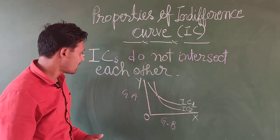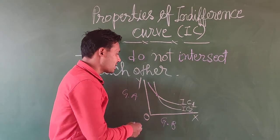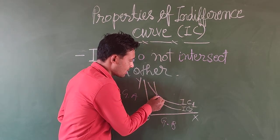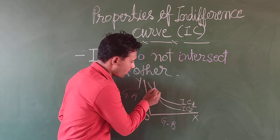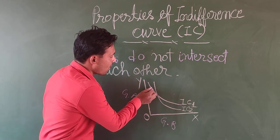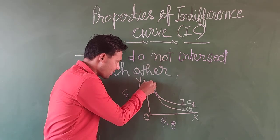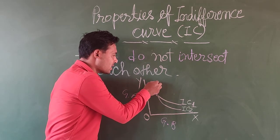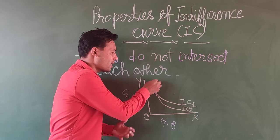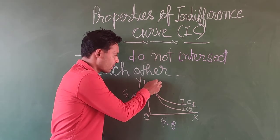We can see here in the graph IC1, IC1 is this and IC2 is here. IC1 is starting with the lower level of its satisfying curve. And IC2 is starting with the higher level of its curve.